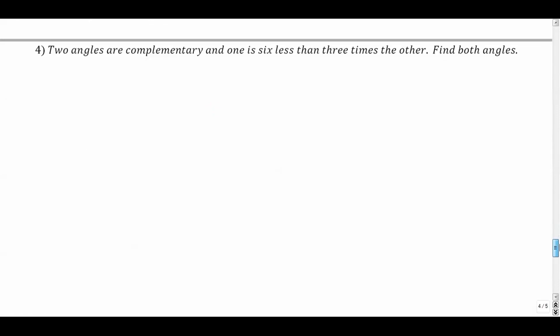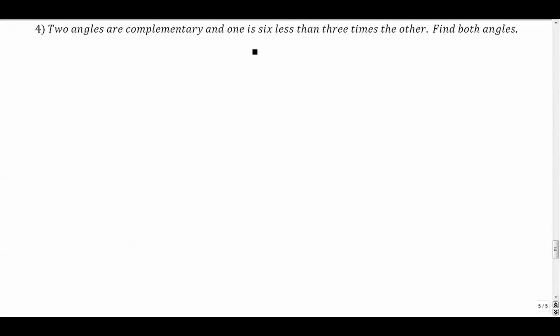Last one: two angles are complementary, and one is six, so you've got 90 degrees here, I'll highlight that. And one is six less than three times the other, find both. All right, so we've got three times the other.